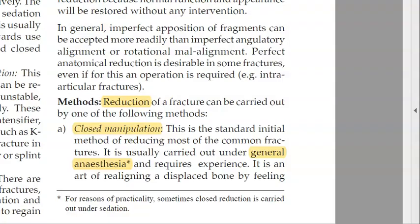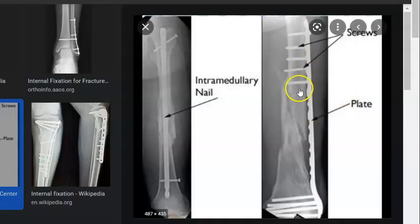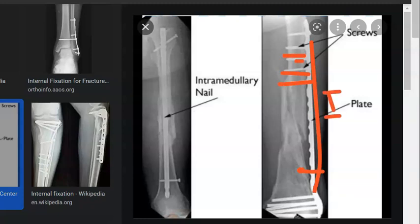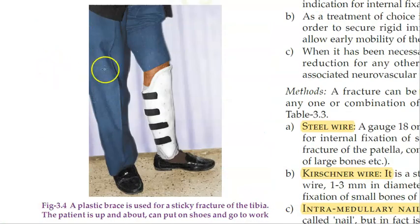External fixation differs from internal fixation. A plate next to the bone with screws is still internal fixation as it's inside the body. An intramedullary nail is placed inside the bone itself — that is also a form of internal fixation. These are all methods within definitive care.